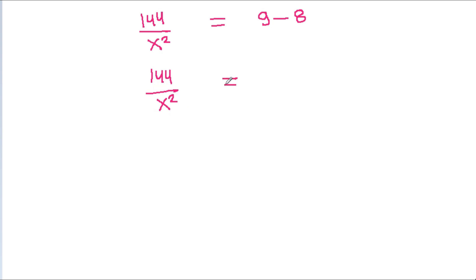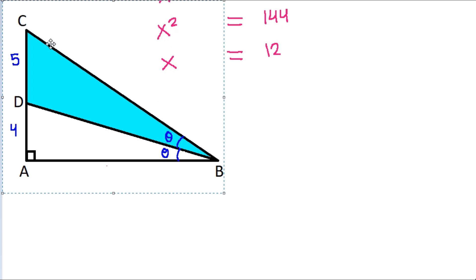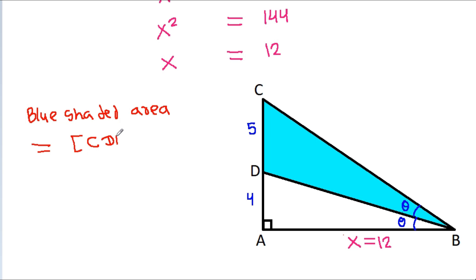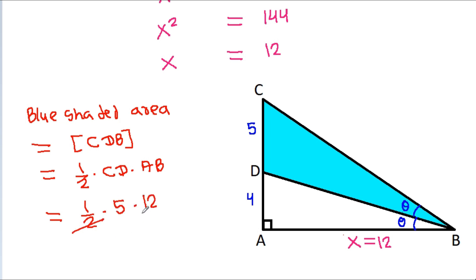Cross multiplying and simplifying, X equals 12. Now the blue shaded area equals area of triangle CDB = (1/2) × CD × AB = (1/2) × 5 × 12 = 30.